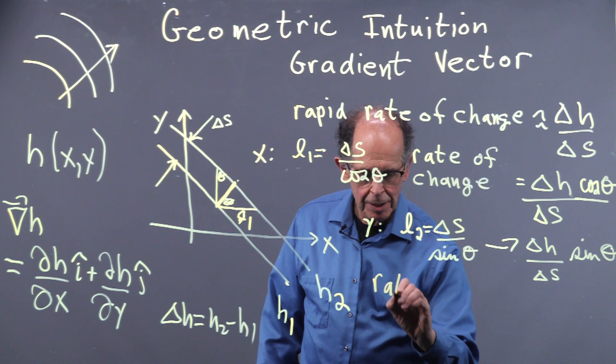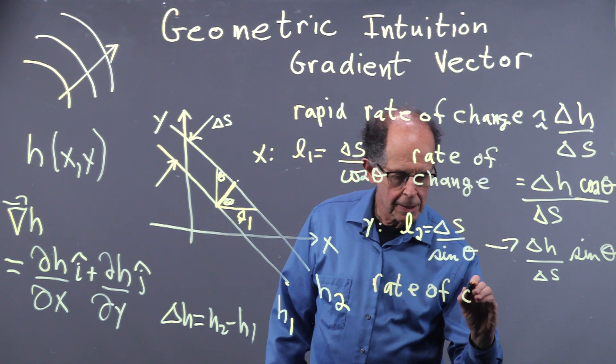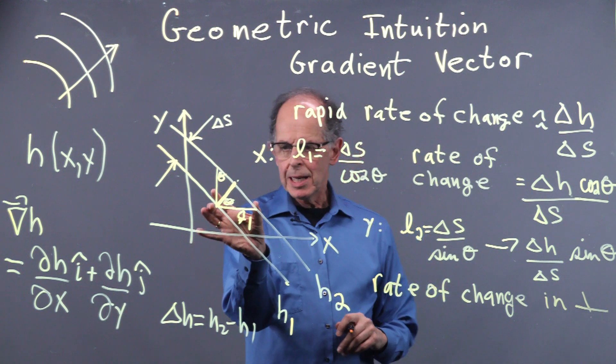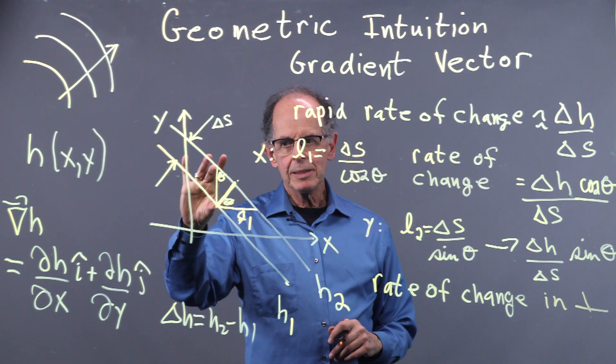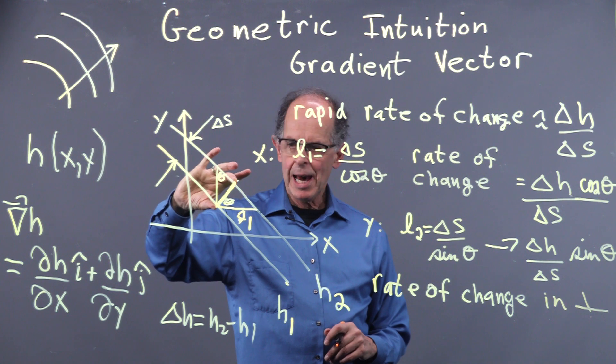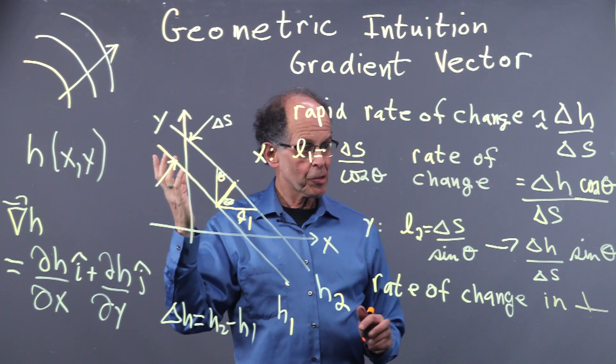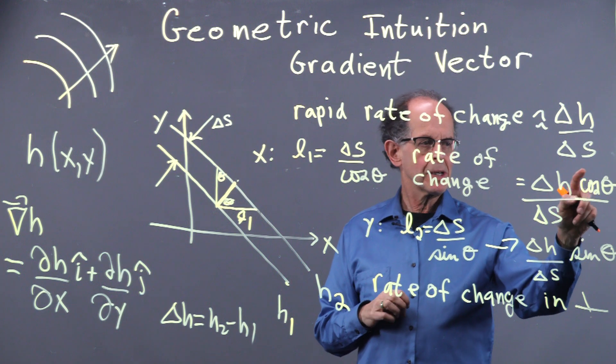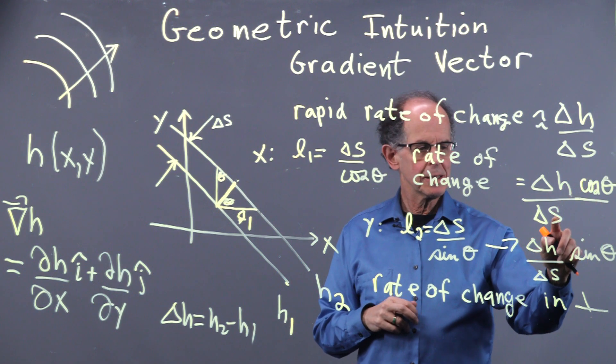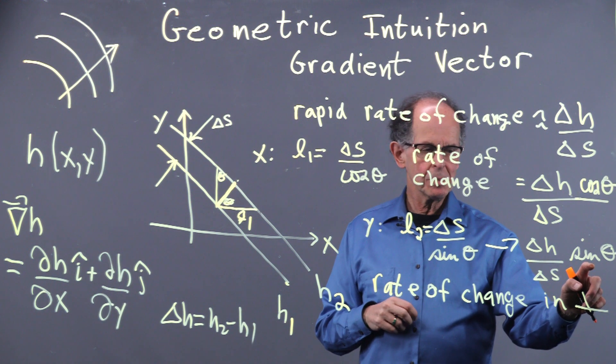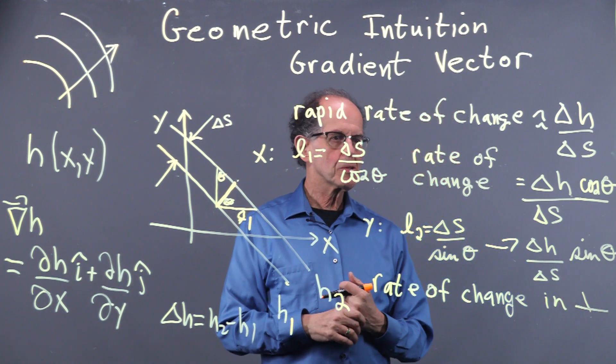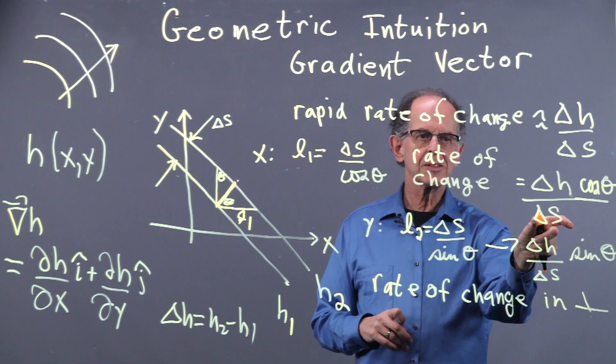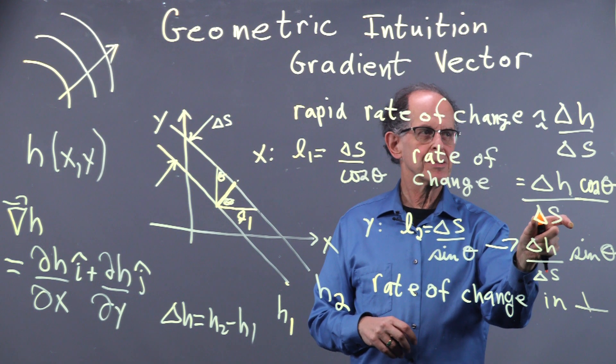So rate of change in the perpendicular direction is going to be this squared plus this squared, square rooted, and hopefully we get that. And that is going to happen because if I take this and I square it, I'm going to get delta H squared times cosine squared over delta S squared. Get the same here with sine squared, and when I do the algebra, what happens? Cosine squared plus sine squared is equal to one. The common factor is delta H over delta S all squared, and so you end up with this, which corresponds to that.